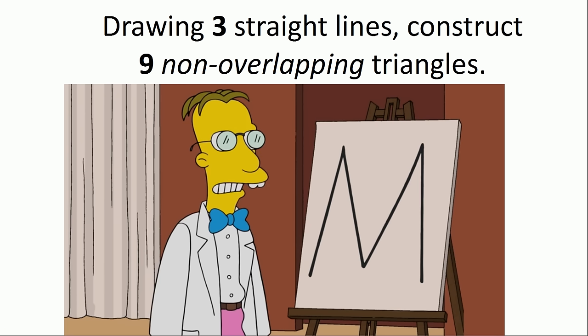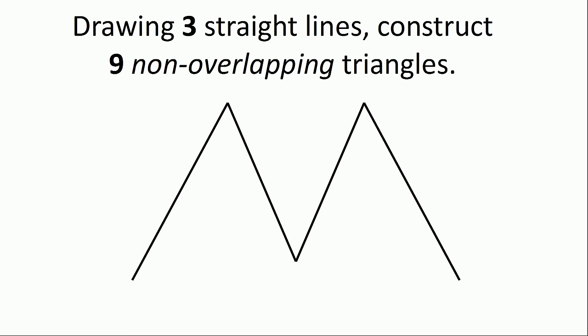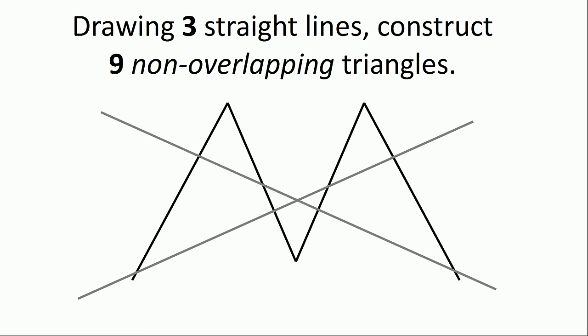Now we return to the puzzle — we need to get nine non-overlapping triangles by drawing only three straight lines in the M shape. The first line we draw will be skewed coming from the bottom left, intersecting all the other lines. We draw another line, exactly symmetrical, starting from the bottom right. Then we draw one final horizontal line. And now we've created nine non-overlapping triangles.